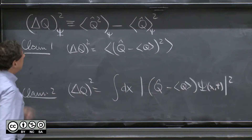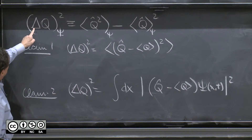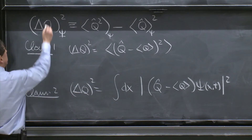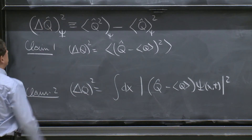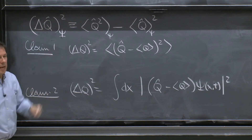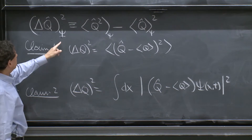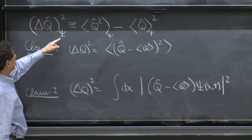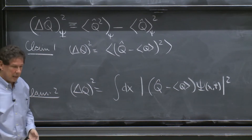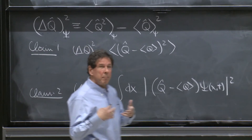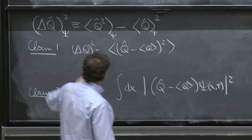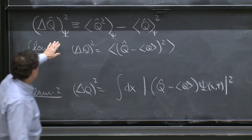We gave this definition, in which the uncertainty of the operator Q in the state ψ — it's always important to have a state associated to measuring the uncertainty, because the uncertainty will be different in different states. So the state should always be there.